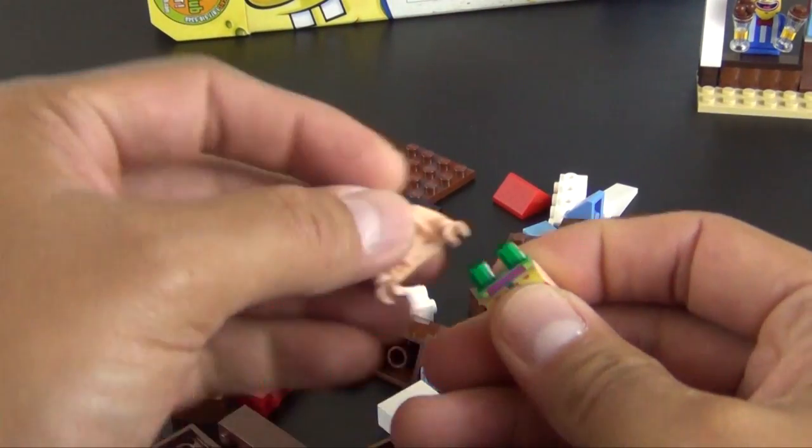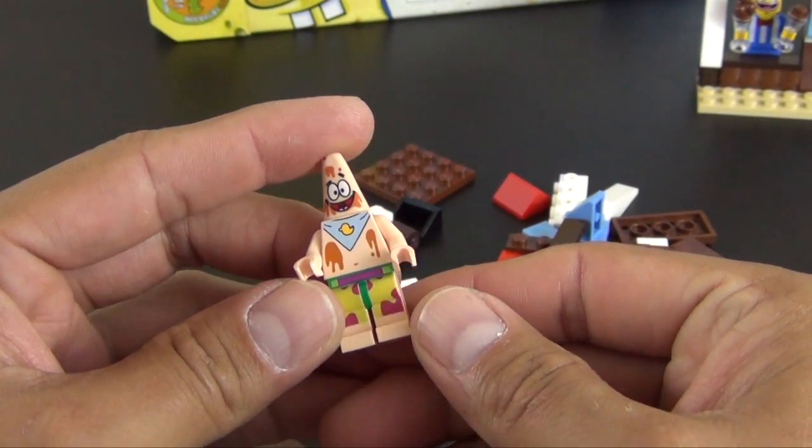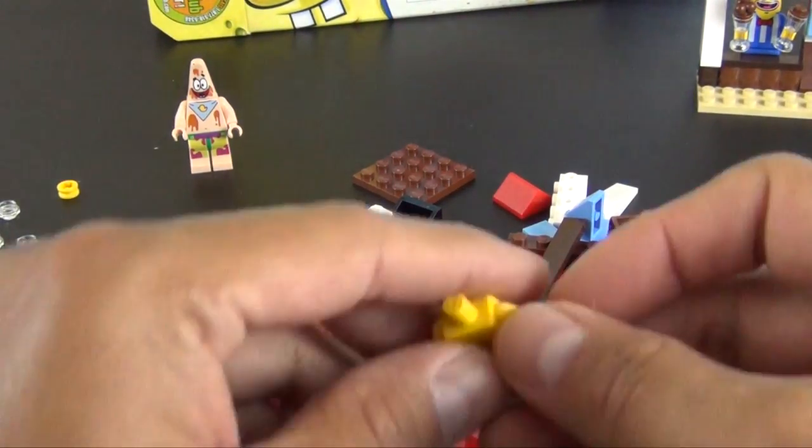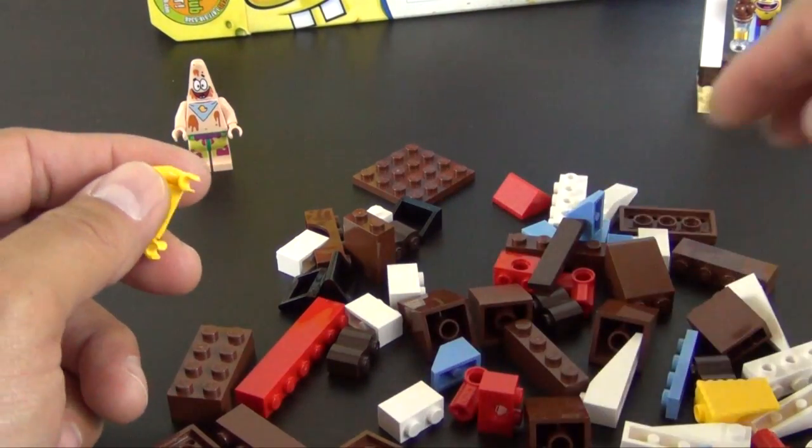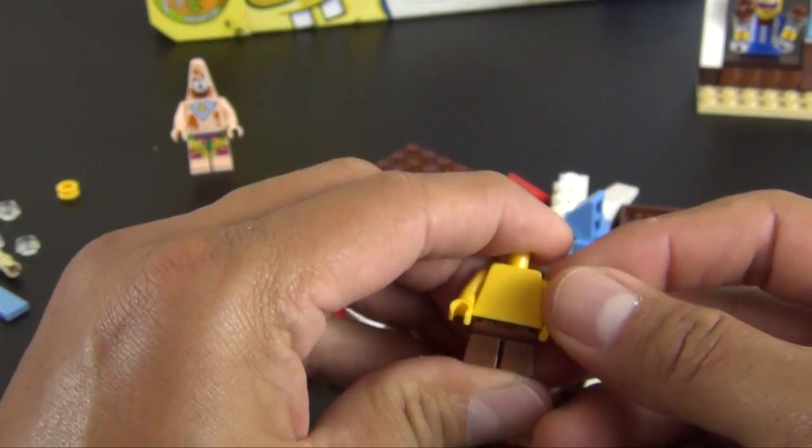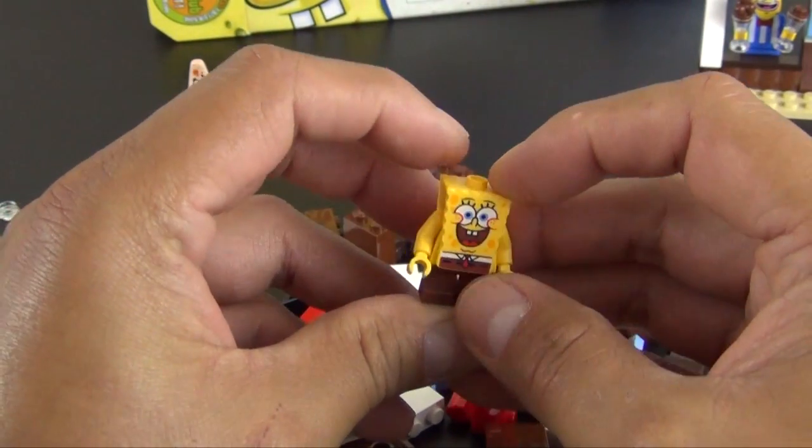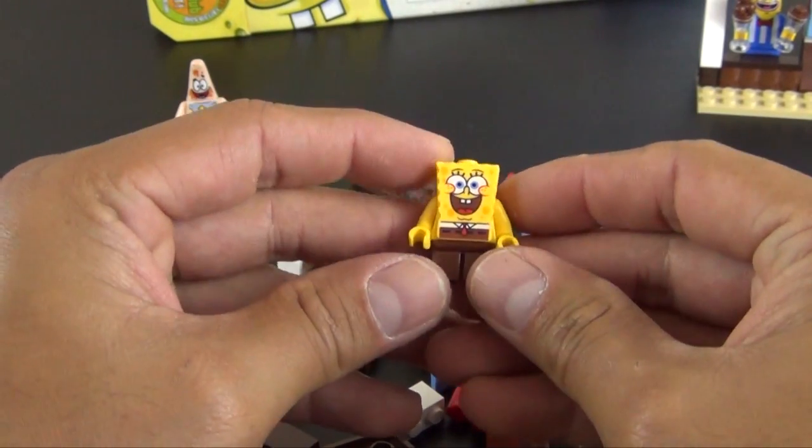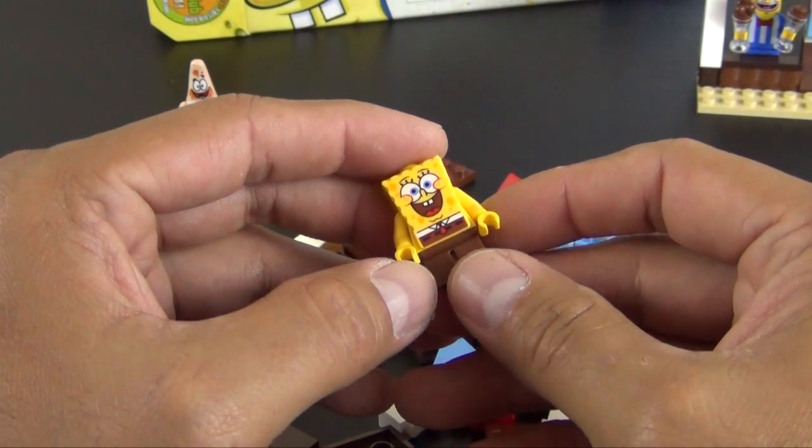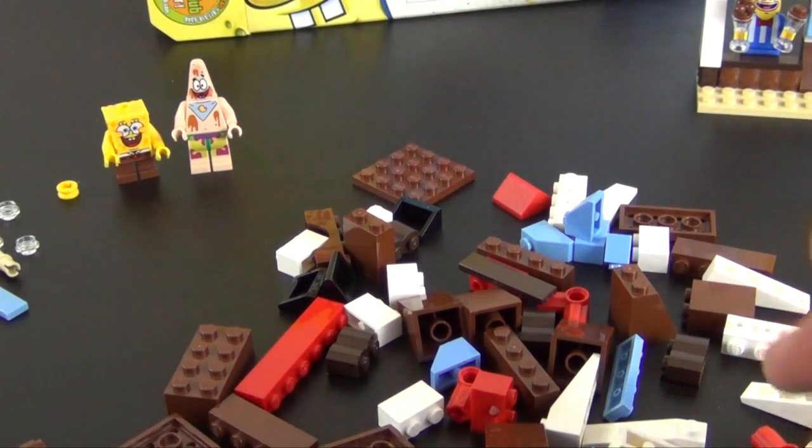All right, so we have the final two minifigures. We have Patrick Star, and he is completely covered in ice cream residue. And we have SpongeBob. SpongeBob uses the shorter legs and he has a big kind of rectangular piece that just goes right over the neck bar of the torso, and that's it for SpongeBob.